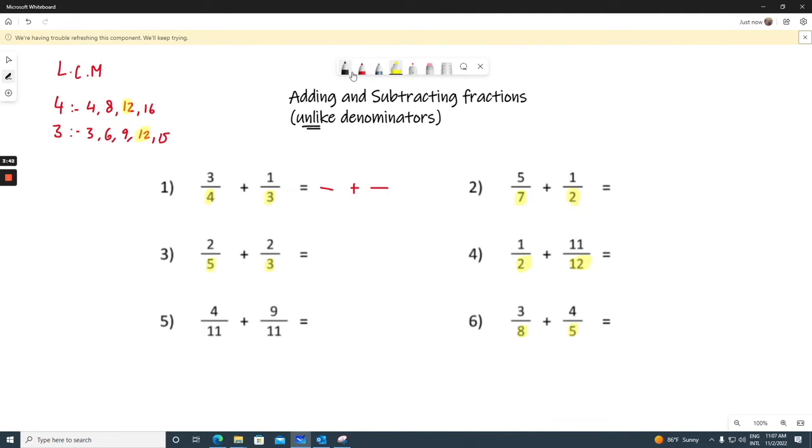It means both my denominators will be 12. Now, next step. How did your 4 become 12? We multiplied it by 1, 2, 3. Times it by 3. You will do the same thing with your numerator. 3 times 3 will give you 9.